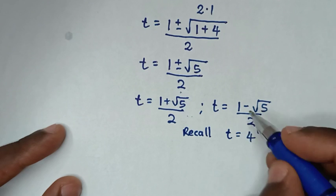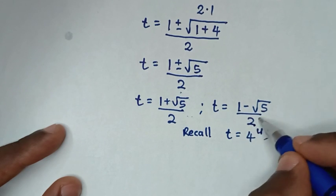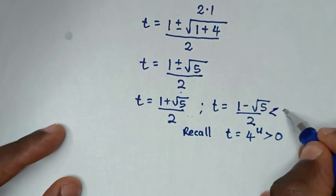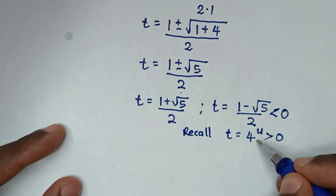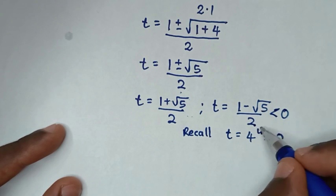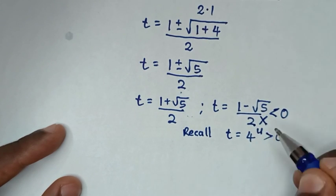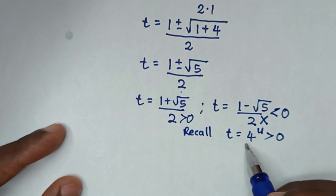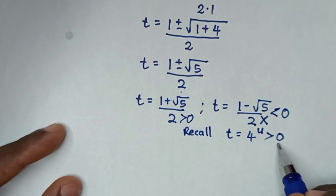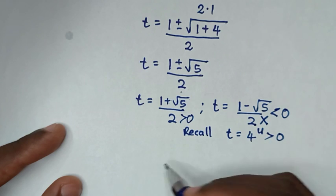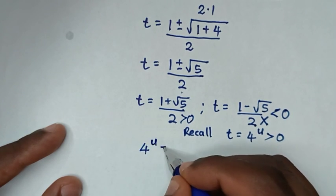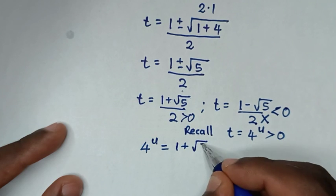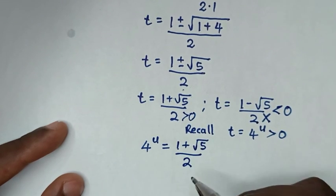Also, 1 minus square root of 5 over 2 is less than 0, but 4 to the power of u is always greater than 0. So this solution is also rejected. Therefore, 4 to the power of u equals 1 plus square root of 5 over 2.